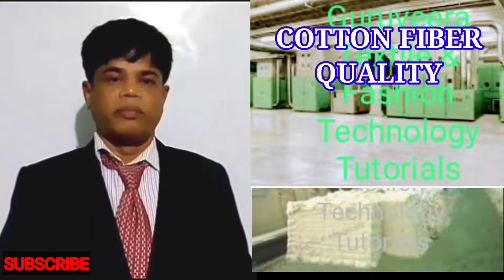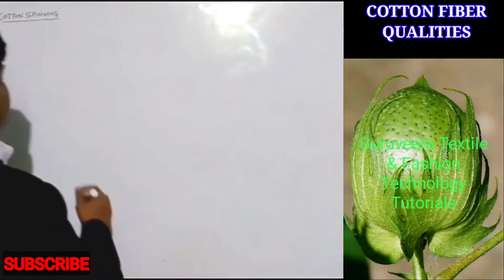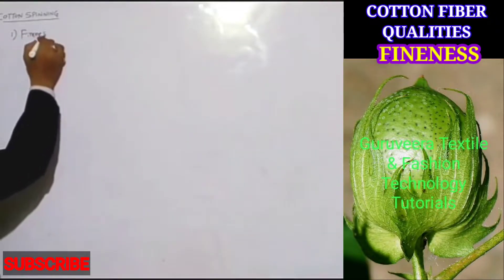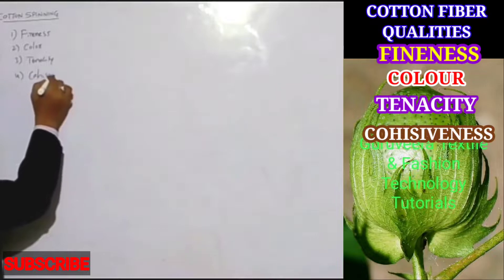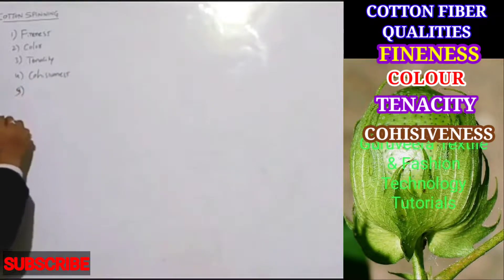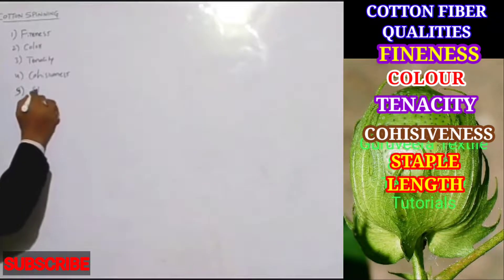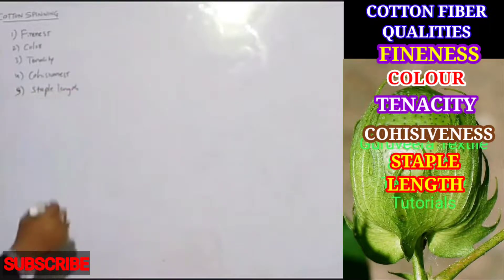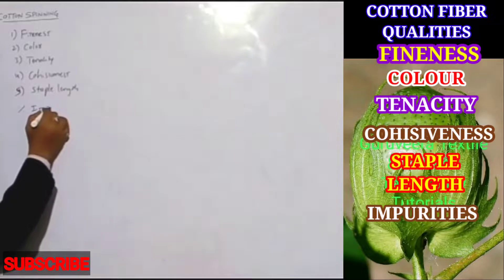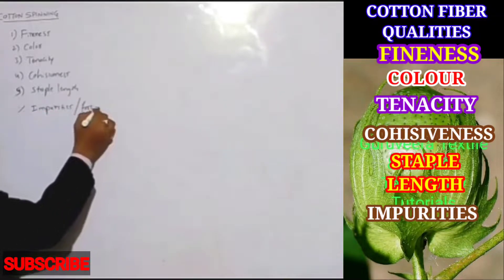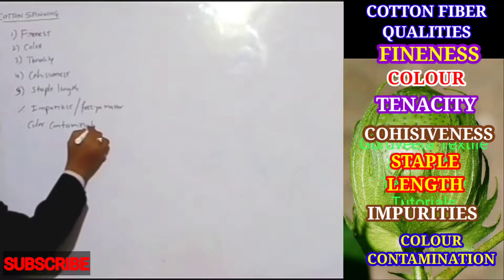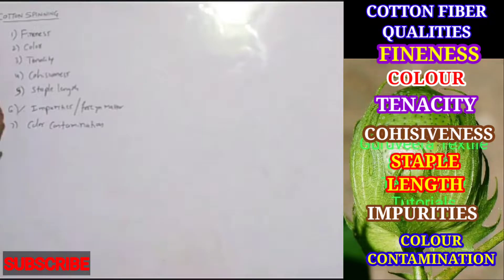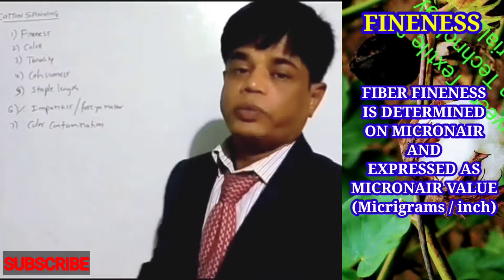Cotton spinning mills source cotton fiber by keeping several key parameters in view: fineness, color, tenacity, cohesiveness, and staple length. These are the main criteria. Additionally, the percentage of impurities or foreign matter and color contamination are also important factors when considering the purchase of raw cotton fiber.